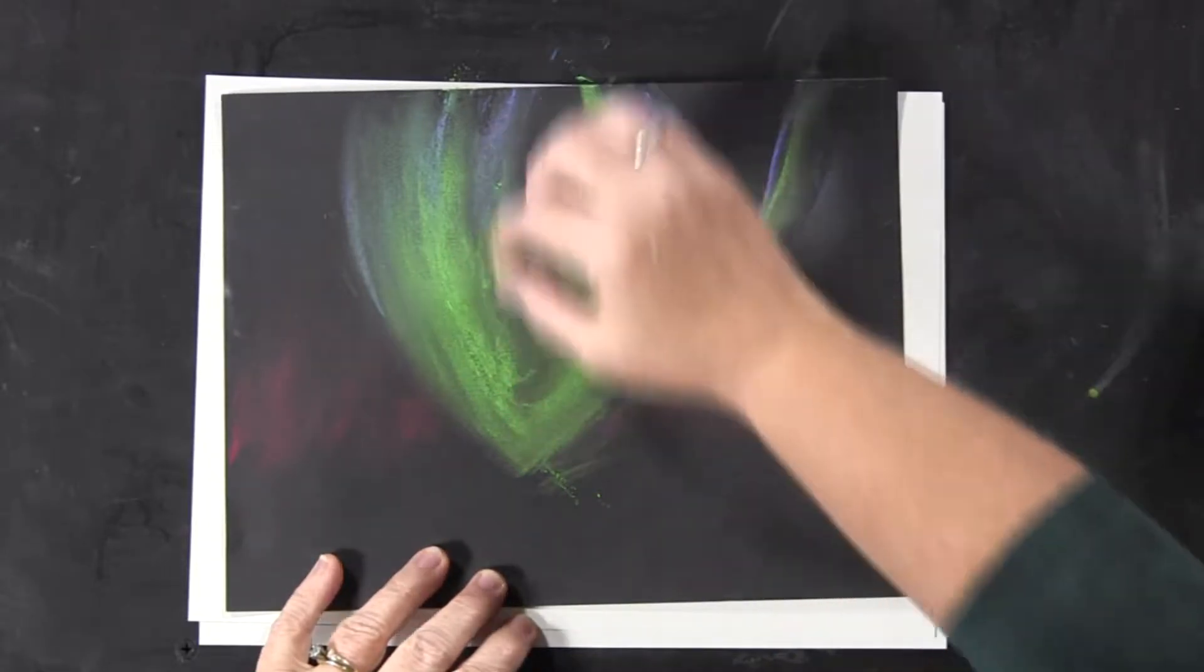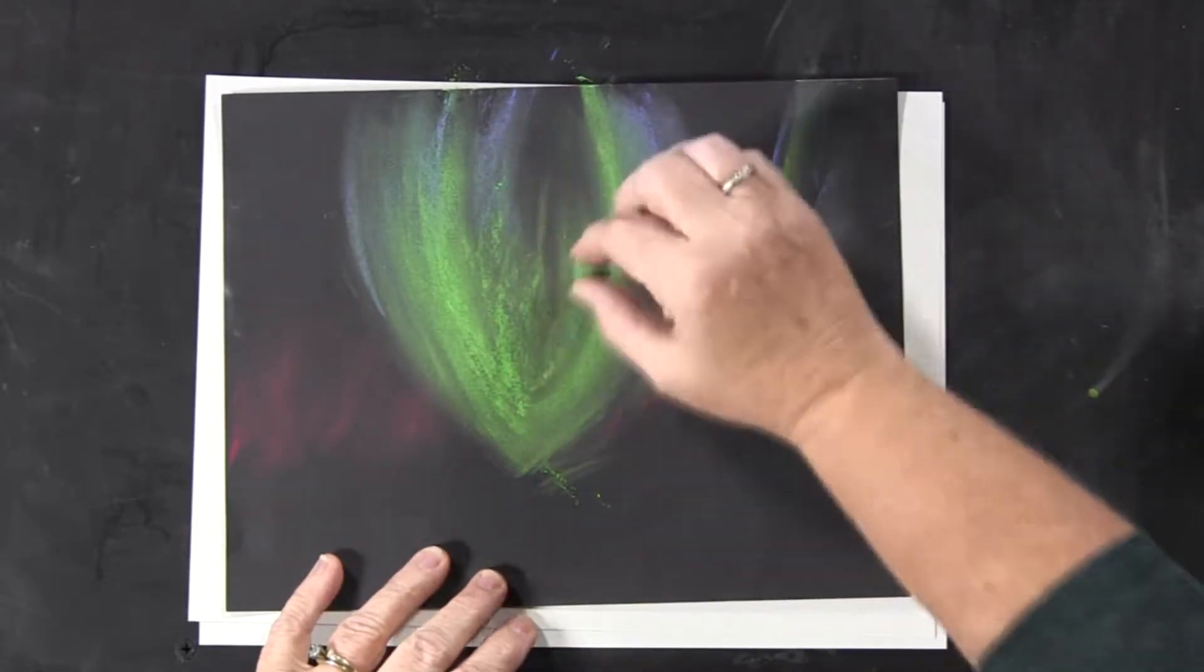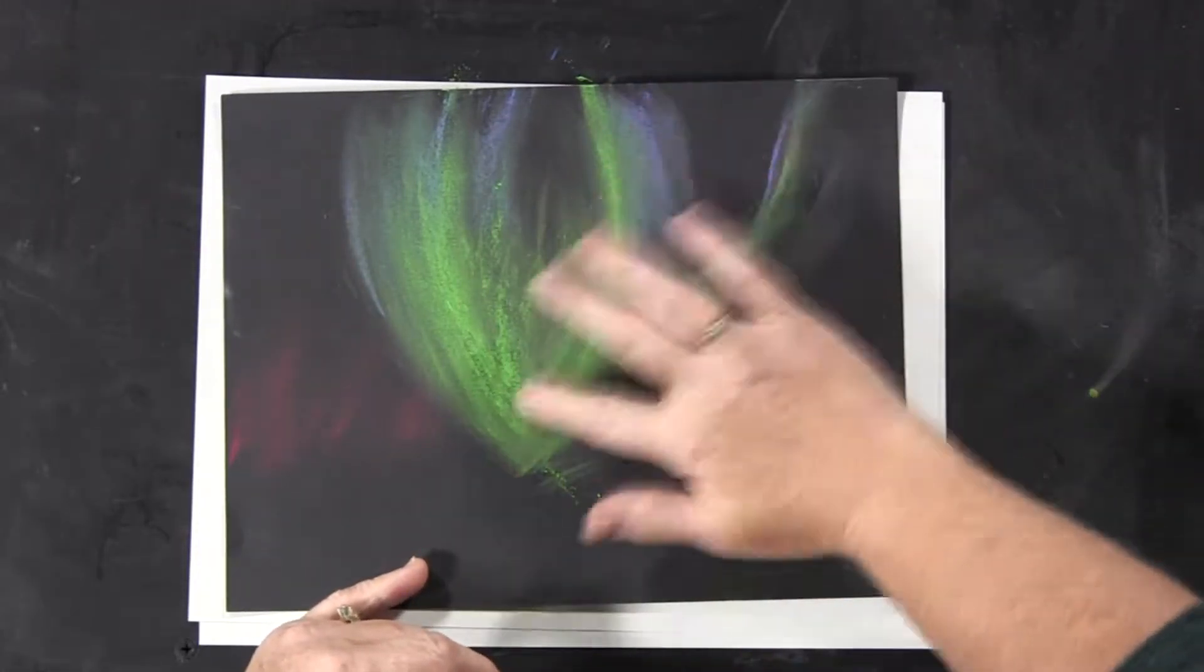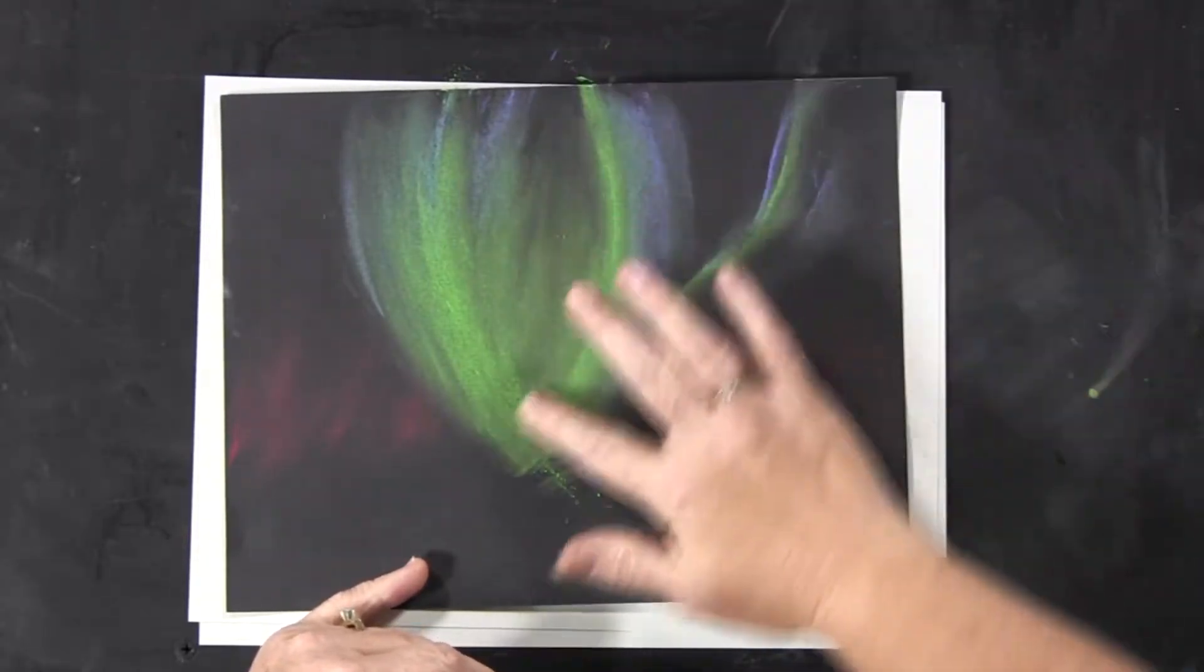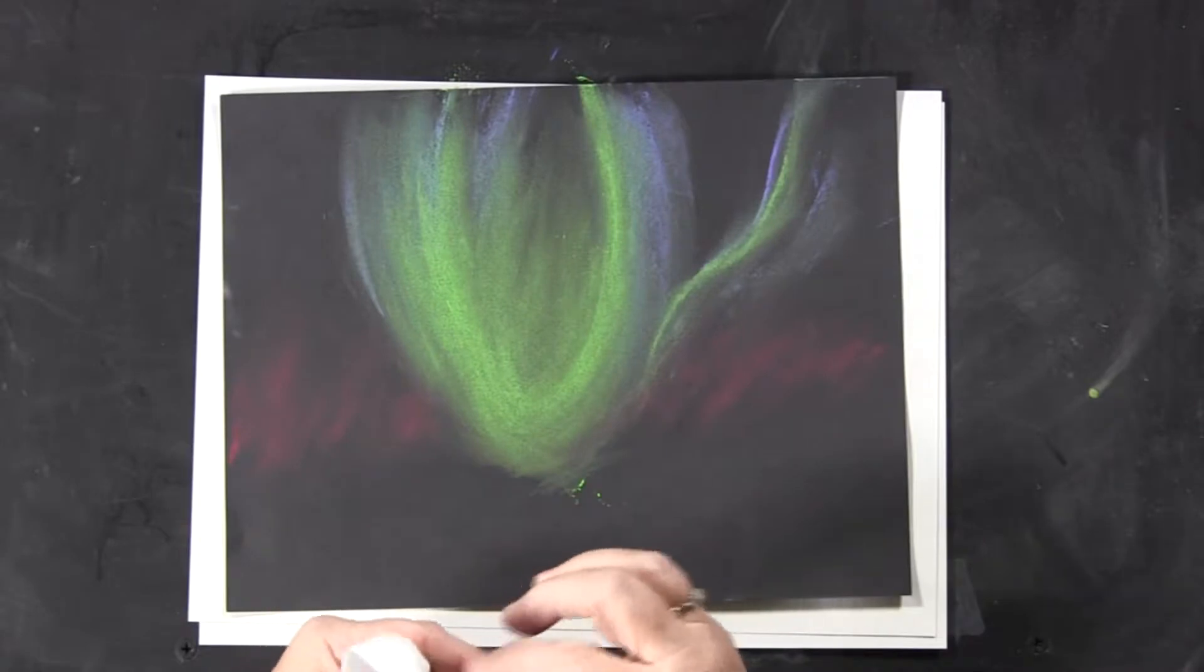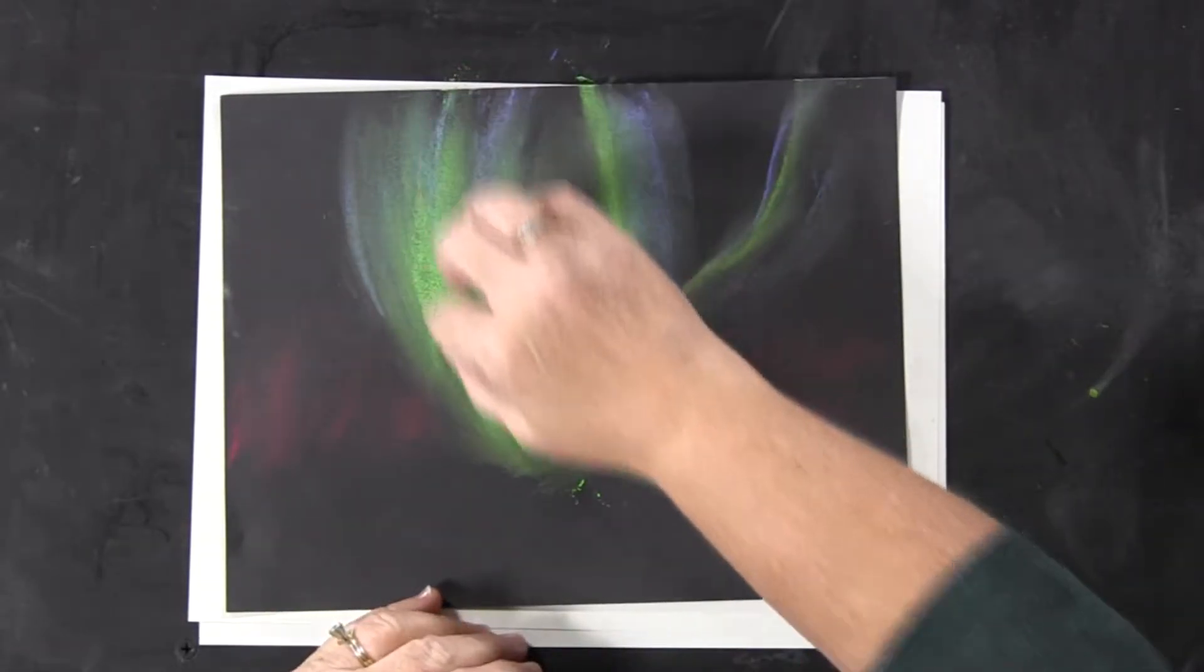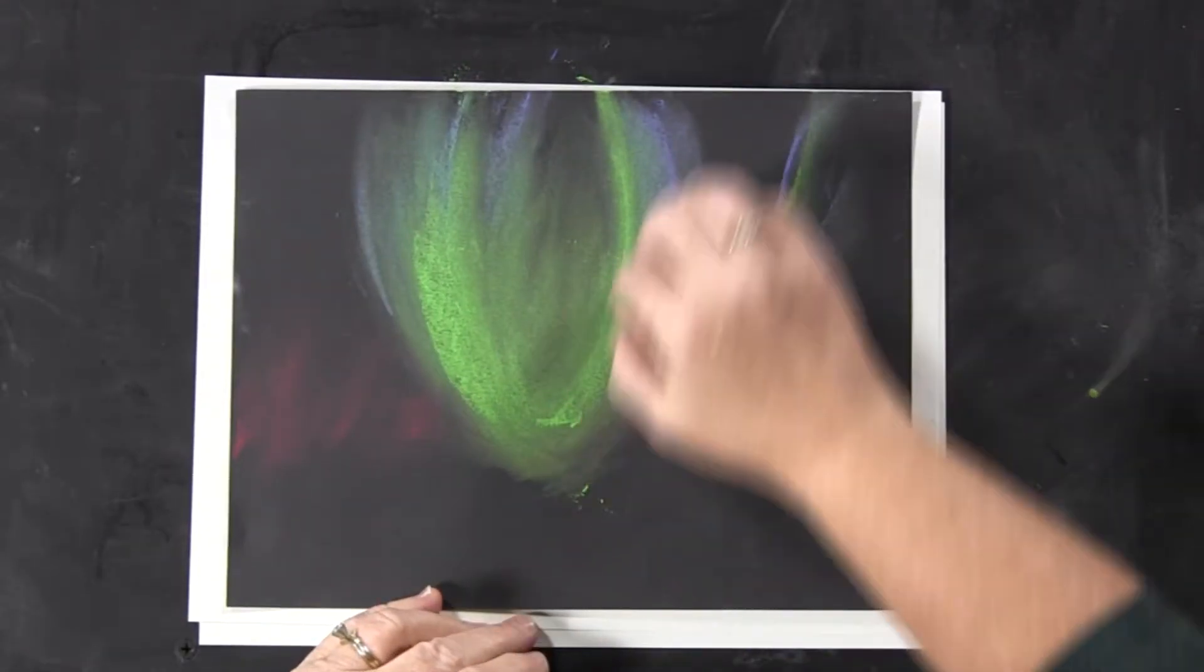I'm going to take my green again and add some more in here in the center. I want that center to be a little different, a little darker maybe than the outside, but I still want some color in there. Then I'm going to brighten it up once more so you can see how we're doing it in layers.